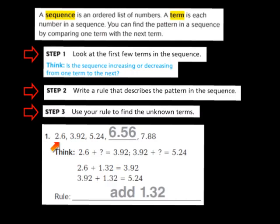To each of my terms, I am adding 1 and 32 hundredths. So in order to find the missing term, I add 5 and 24 hundredths plus 1 and 32 hundredths, and that takes me to 6 and 56 hundredths. I now have both my rule and my unknown term.